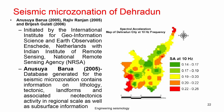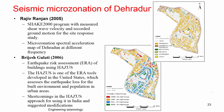Anusha carried out a database for contact lithology, tectonics, landforms, associated near-tectonics, regional scale and subsurface information, and then tried to produce a spectral acceleration map of Dehradun at 10 Hz frequency. You can see the spectral acceleration values corresponding to 0.01 seconds and how the SA values are mapped.